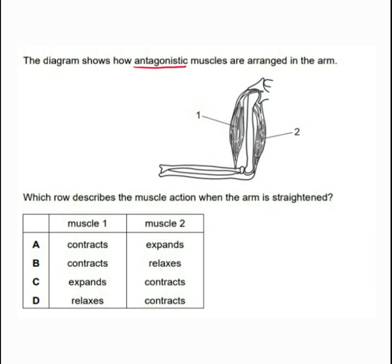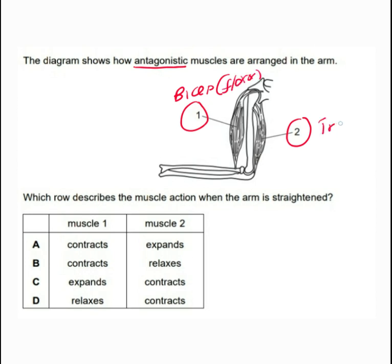These muscles are arranged in the arm. Before you even answer the question, you need to know what each muscle is. This one is what we call the bicep — the flexor — and this one is the tricep — the extensor.